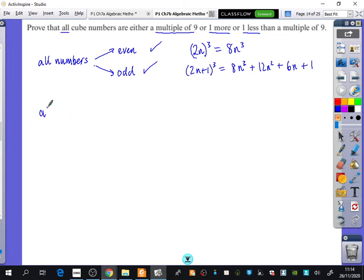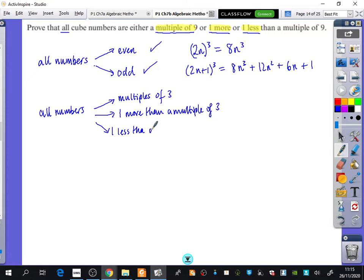For this particular question, we are going to break all numbers down into something different. There's a bit of a clue in the question because they said multiple of 9 or 1 more or 1 less. They said it could be 1 of 3 different things, which means instead of breaking numbers into 2 situations, I'm going to break them into 3 situations: multiples of 3, one more than a multiple of 3, and one less than a multiple of 3.